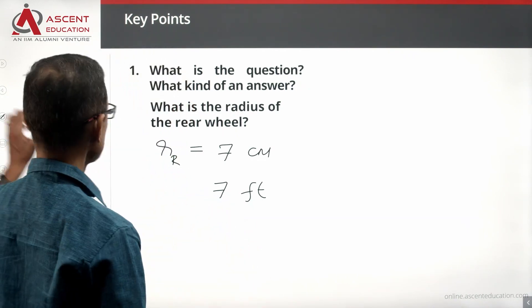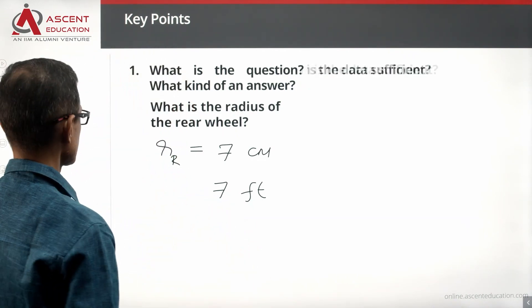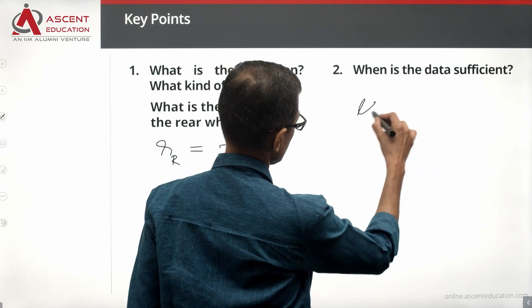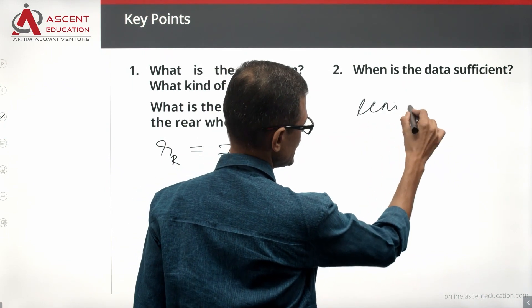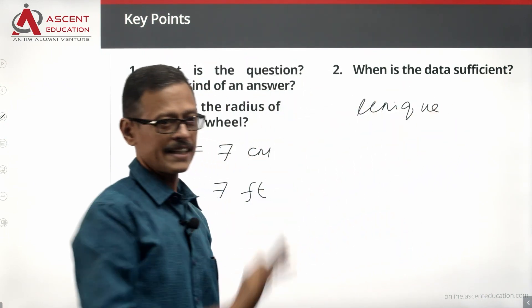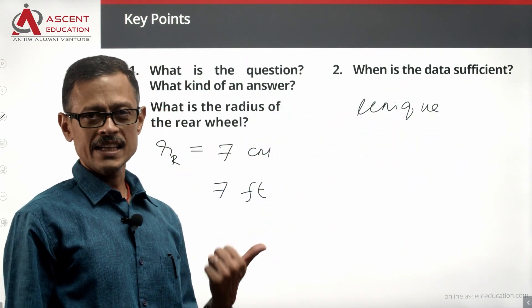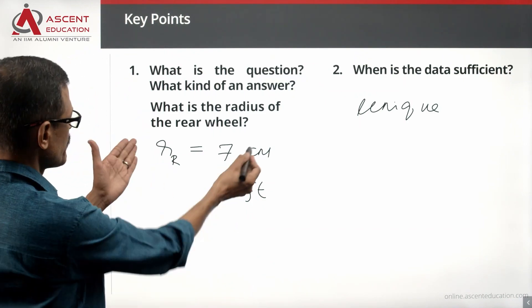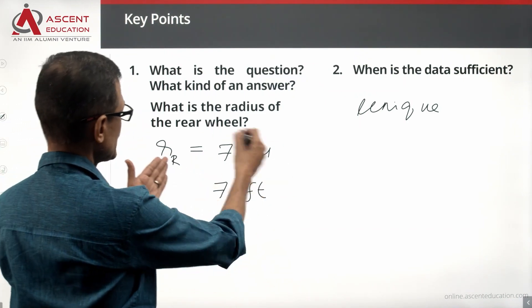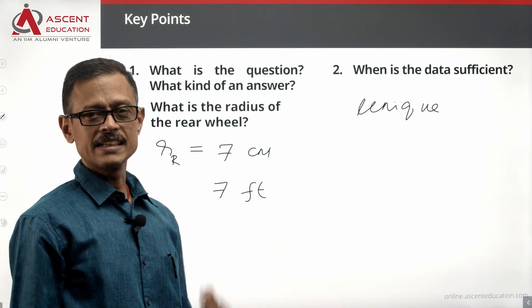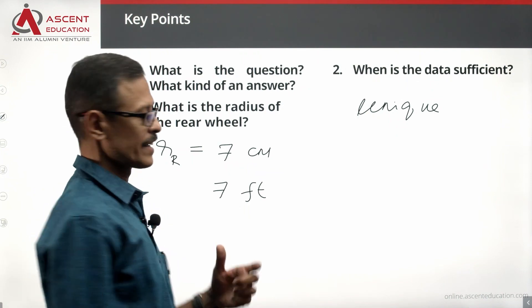If you are finding a number as the answer to the question, the data is sufficient when we have a unique value. Let's take a look at Statement 1 and see whether we are able to get a number for the radius of the rear wheel.